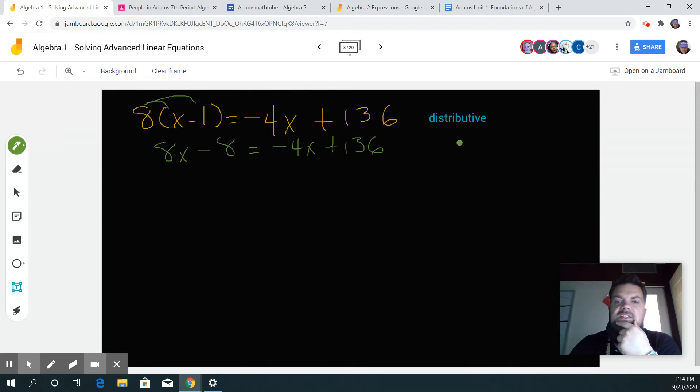I want to make this look like x equals some stuff, so that means I got to put all my x's on one side of the equal sign and all the other stuff on the other side.